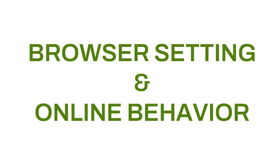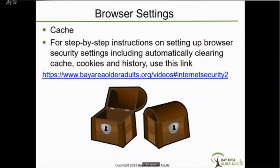Our next topic is browser settings and online behavior. First, I want to explain the term 'cache.' In regular English, cache means secret storage. In the case of your browser, the browser stores information about what websites you visit and what you do on those websites — it stores it in the cache. The security issue is that it stores all the information you added to an online form, like your address, email, password, and other personal information. One way to keep companies from tracking you with spyware is to set your browser to automatically clear cache, cookies, and history when you close your browser.